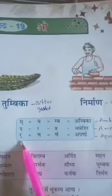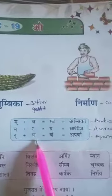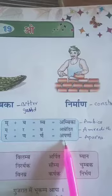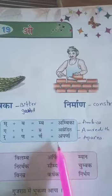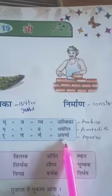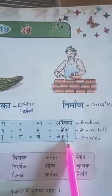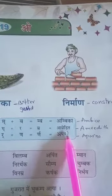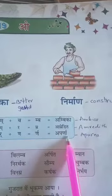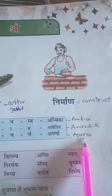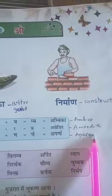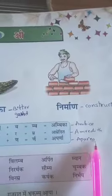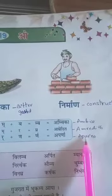Ra plus ana gives mre out — Aparna. The spelling is A-P-A-R-N-A. One name is Aparna.